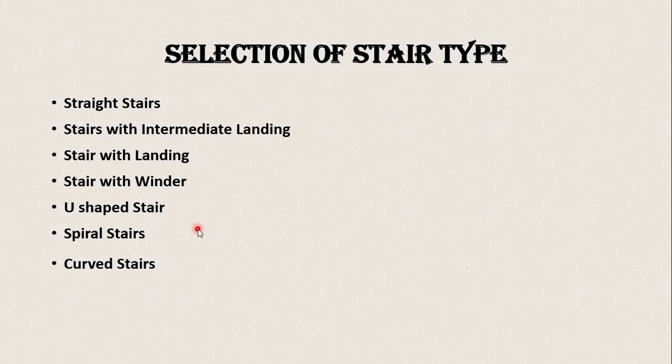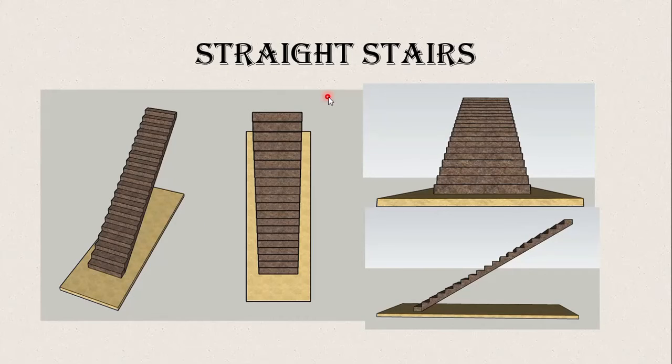stairs with winder, U-shaped stairs, spiral and curved stairs. Here you can see an example of straight stairs without any landing or winder. This is the isometric view, and this is the top view, front and side view of straight stairs.